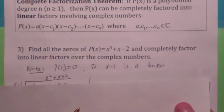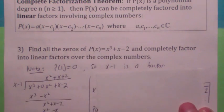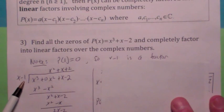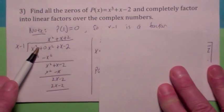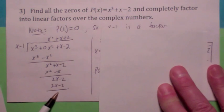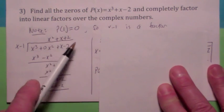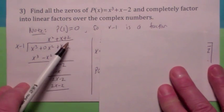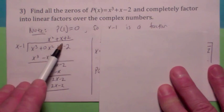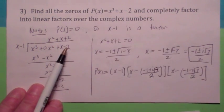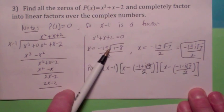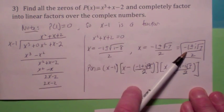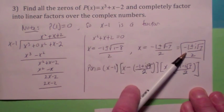Now, how would you find the other two? Well, if you use long division and you divide x minus 1 into the polynomial, it goes in evenly, and your quotient is x squared plus x plus 2. So, then what you could do is set this quotient equal to 0. Unfortunately, when you do that, it doesn't factor. You'd have to use the quadratic formula. You end up with two non-real solutions.